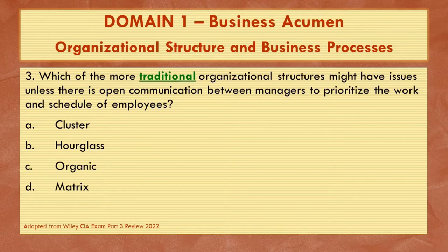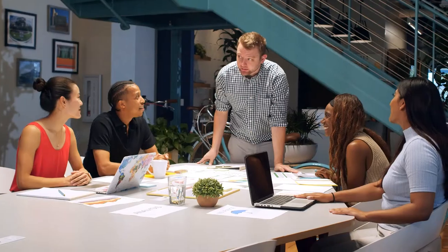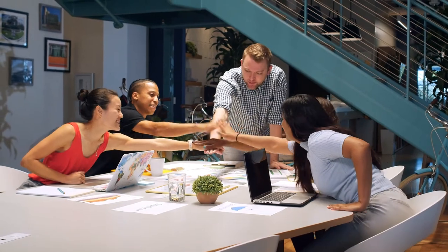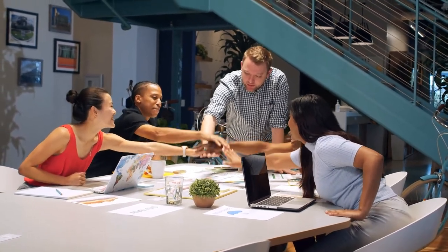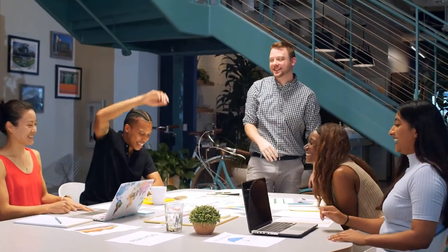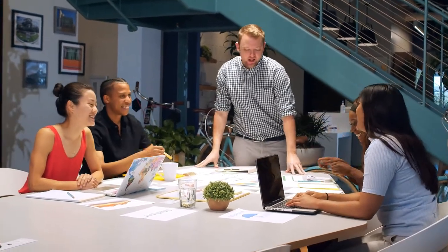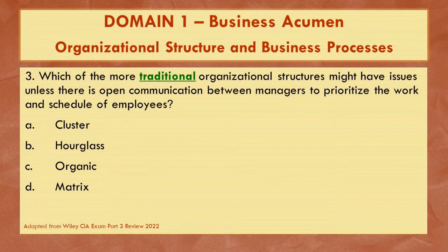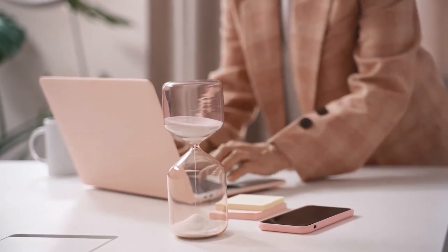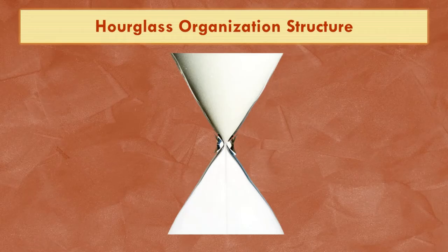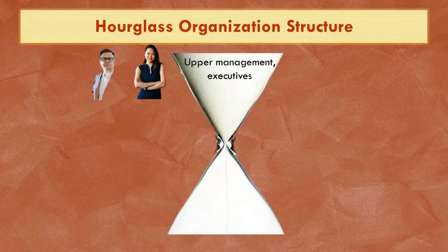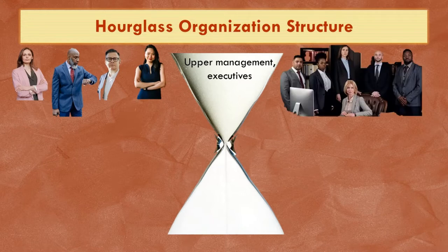A cluster structure is a non-traditional structure that includes both permanent and temporary teams, created based on the organization's objectives and required skills. An hourglass structure is a non-traditional structure that has more higher-level executives — think of an hourglass shape — such as a CEO, COO, CIO, CAO, and a smaller number of middle management workers.